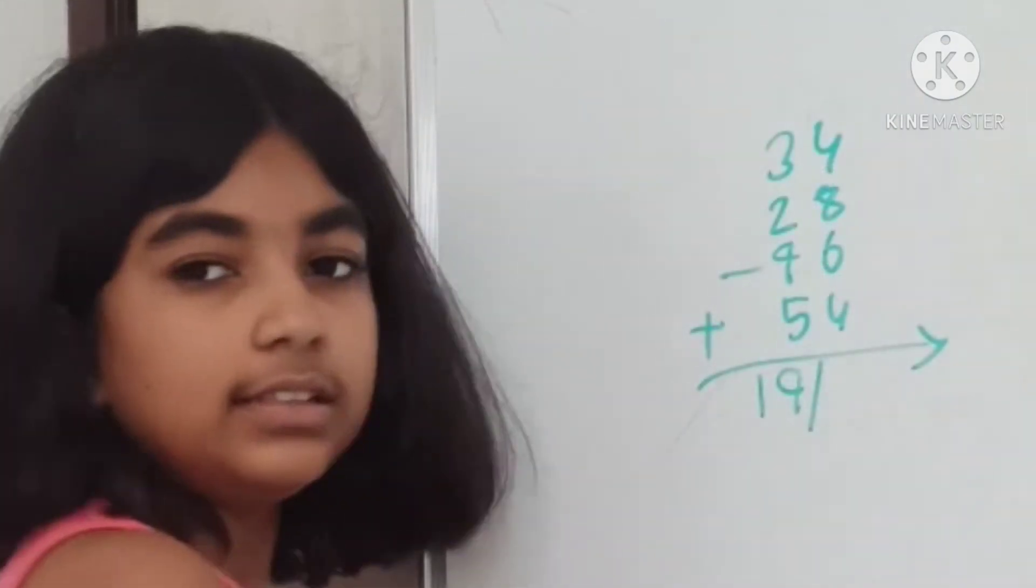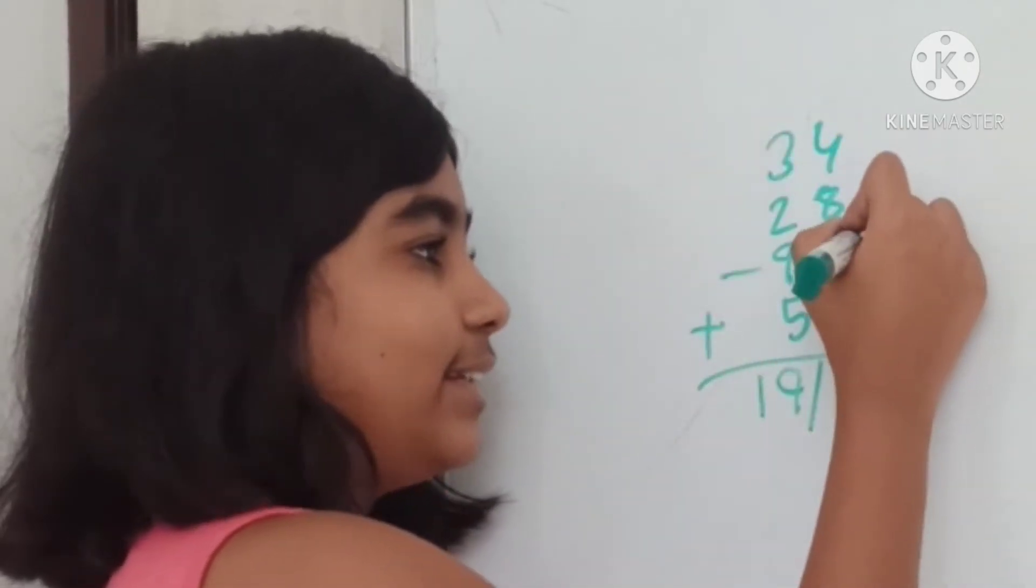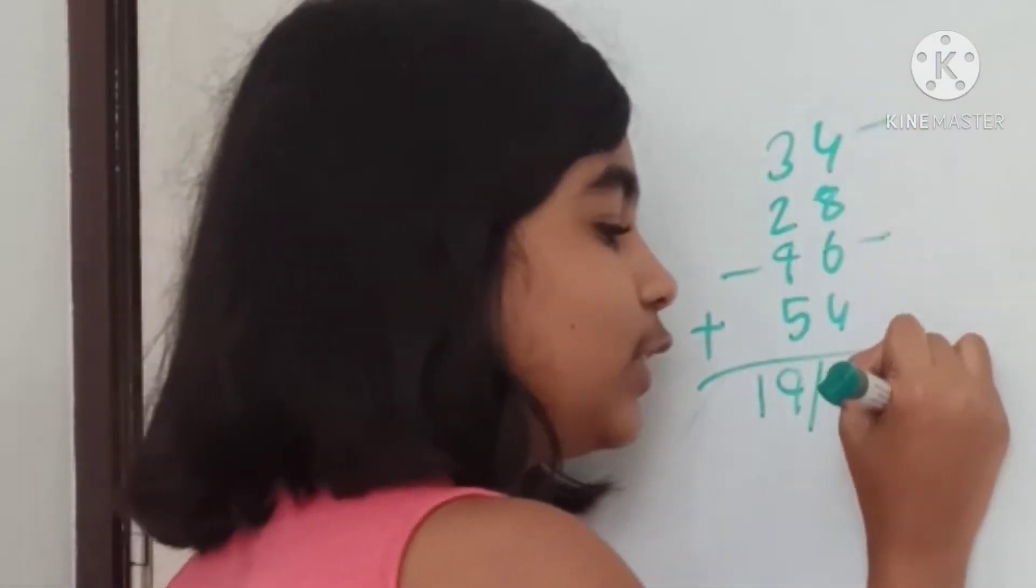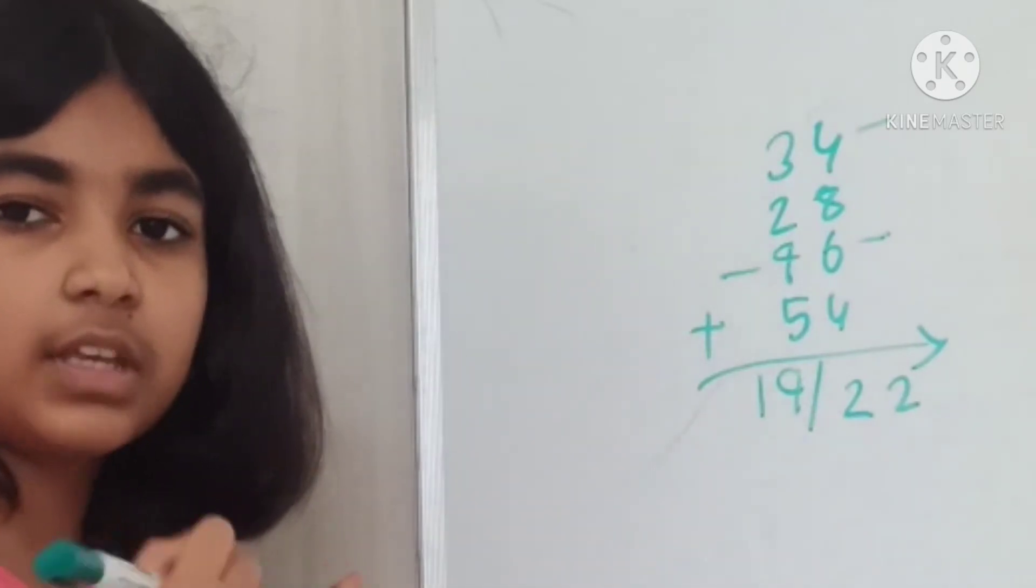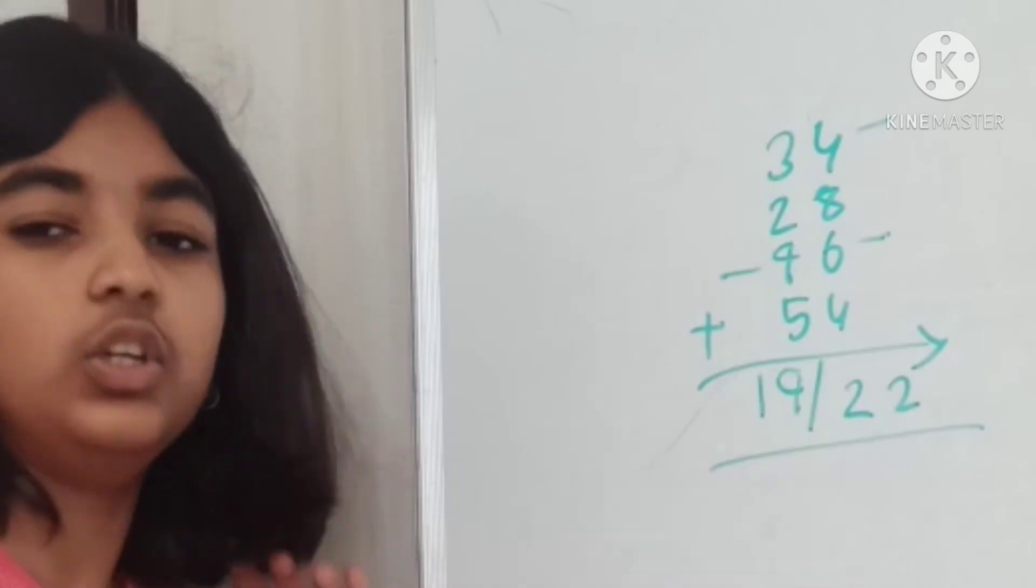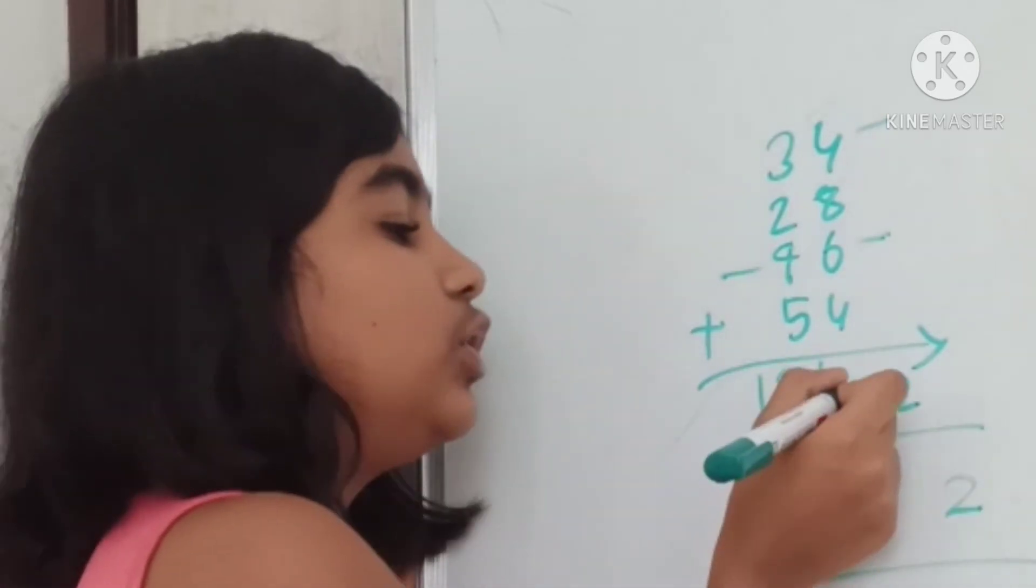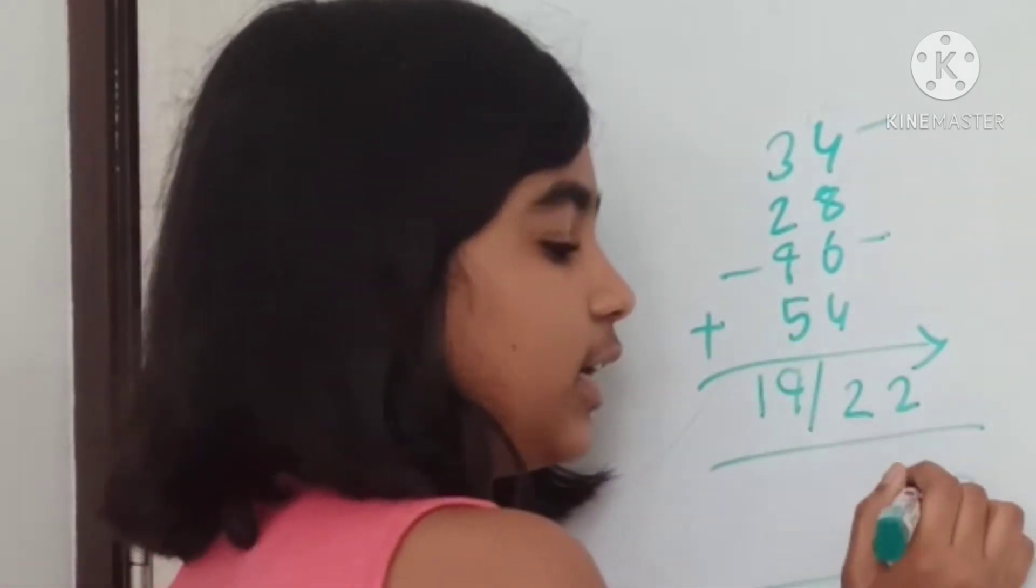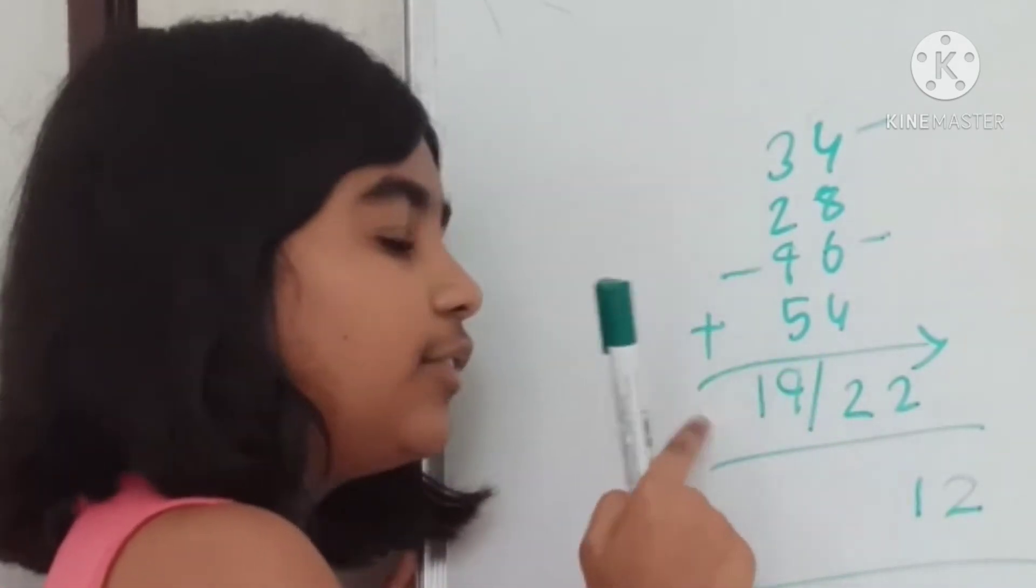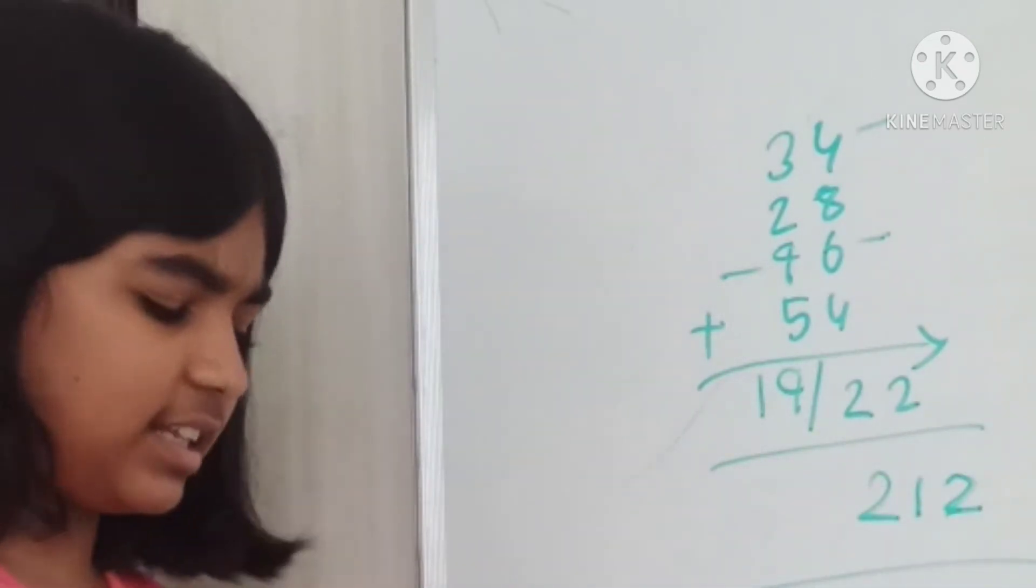Let us add the right side column. So, 6 plus 4, 10. 0 plus 8, 8. 8 plus 4, 12. Now, you'll see, is this your answer? No, this is not your answer. So, to get your final answer, you take 2 down as it is. We'll add 2 with 9, 11. We'll keep 1. We'll add the leftover 1 with 1. This is the answer.